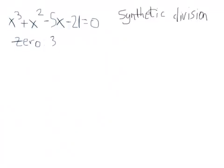I could just graph it and see that the graph crosses the x-axis at three. So that means that x minus three is a factor of that.